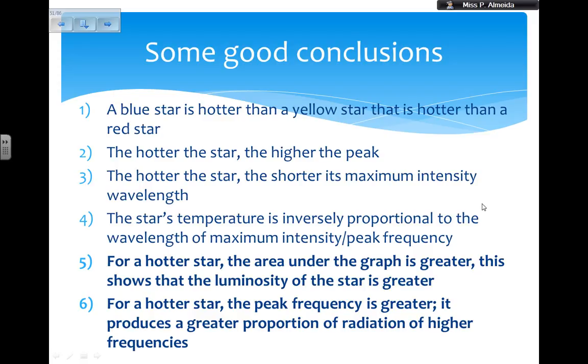For a hotter star, for example that blue one, the area under the graph is greater. This shows that the luminosity of the star is greater as well. And finally, for a hotter star, the peak frequency is greater and this produces a greater proportion of radiation of higher frequencies. Five and six are not as easy to spot from those graphs.